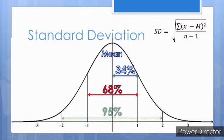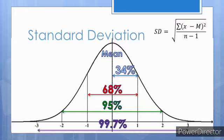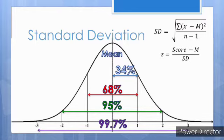Approximately 95% of scores fall between two standard deviations above and two standard deviations below the mean. And approximately 99.7% of scores fall between three standard deviations above and below the mean. These z-scores are used to measure how many standard deviations above or below the mean a particular score is, and allow for comparison and probability calculations.